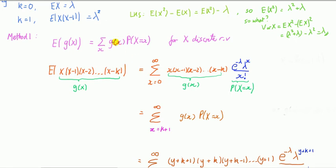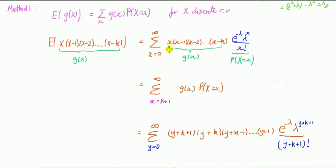So my g function here is all this stuff. Just substituting into this expression, we have this times the probability mass function for Poisson with parameter lambda. Now the next step, focusing on the summation: x goes from 0 to infinity because for a Poisson variable it takes values 0, 1, 2, and so on without limit — that's why we're summing from 0 to infinity.